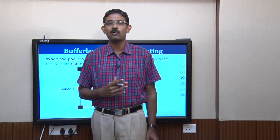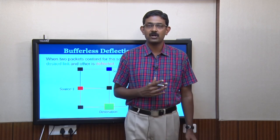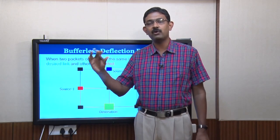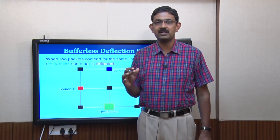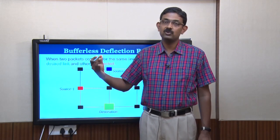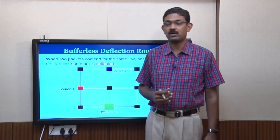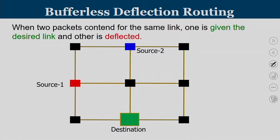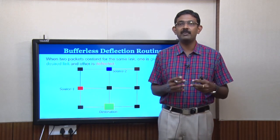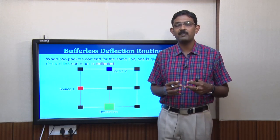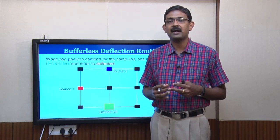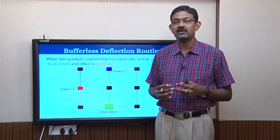Deflection means forwarding the packet in a non-productive direction. Since it is a mesh topology, even though you are going away from your destination, at adjacent routers you can still come back onto the productive path. So the idea of a bufferless deflection router is: when two packets are competing for the same link, one packet is given the desired link and the second packet is deflected away.